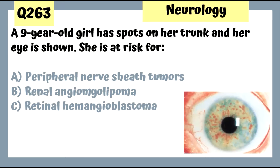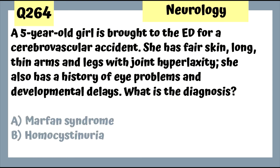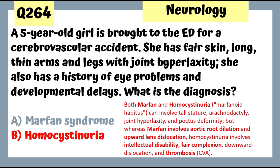Question 263: A 9-year-old girl with spots on her trunk and Lisch nodules on eye exam has neurofibromatosis type 1, associated with peripheral nerve sheath tumors. Question 264: A 5-year-old girl with fair skin, long thin arms and legs, joint hyperlaxity, eye problems, and developmental delays — you might think Marfan, but it's actually homocystinuria. This explains the developmental delays and fair skin. Also assess the patient for thrombosis, as many develop thrombosis such as a CVA.